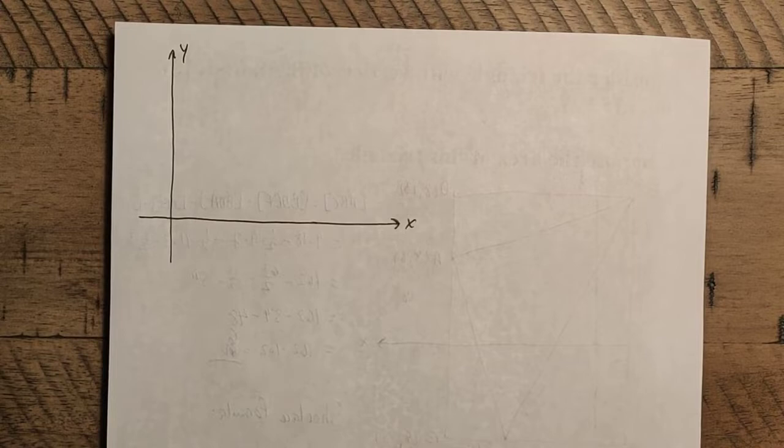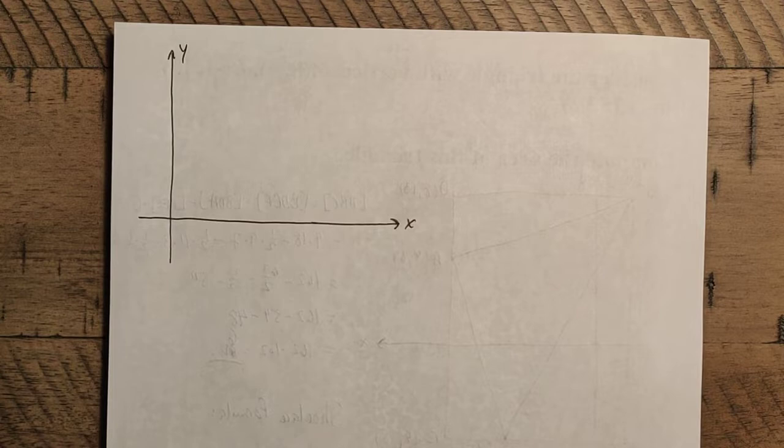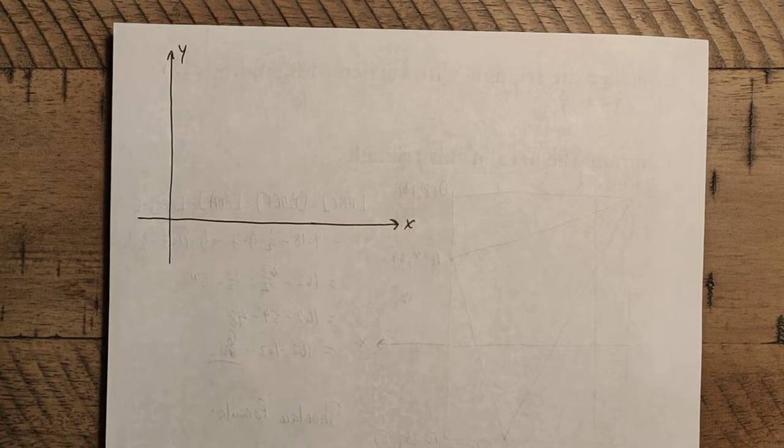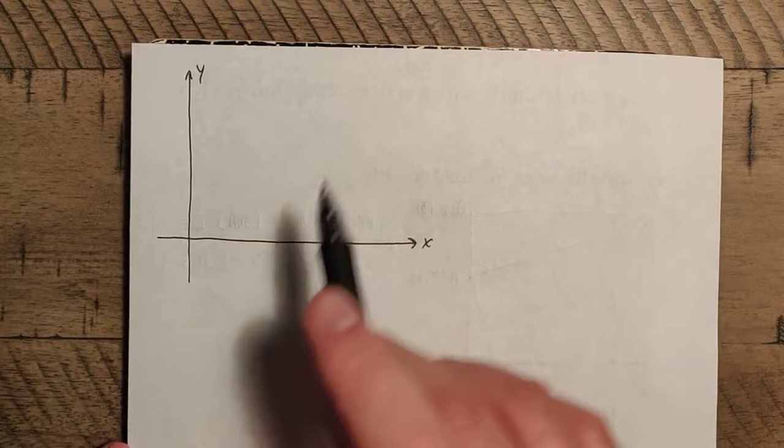The idea is why does the shoelace formula work. The full proof is beyond the scope of this course — it would require knowledge of matrices and determinants, which is presumably where the formula originally came from. What we're going to do is start with the simplest case: prove that it works for triangles, and then see where it goes from there.